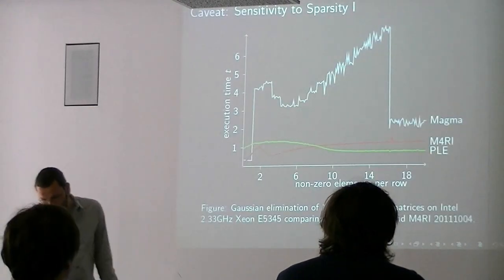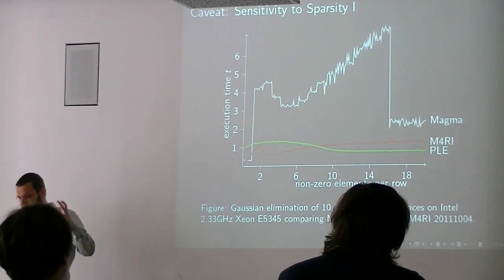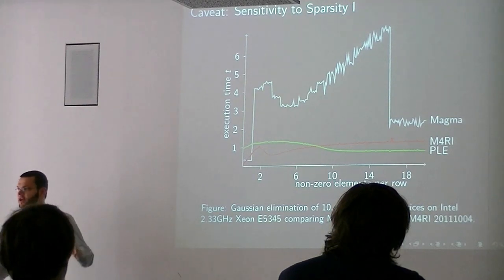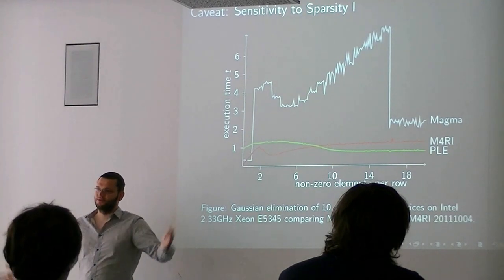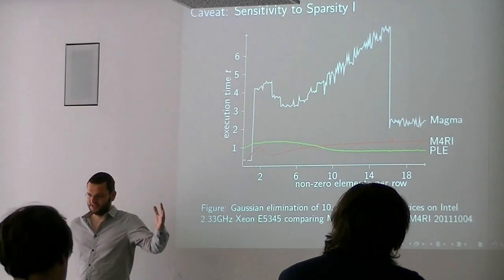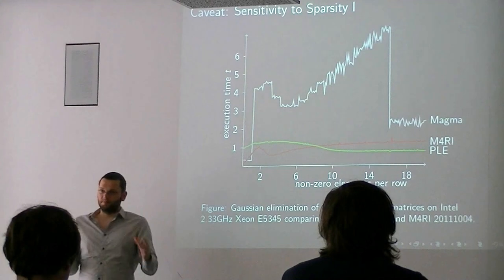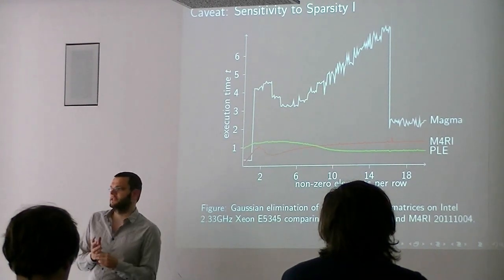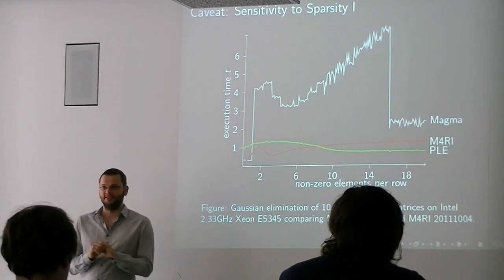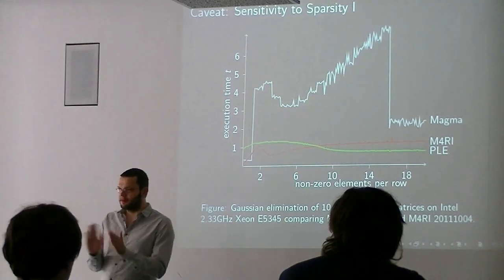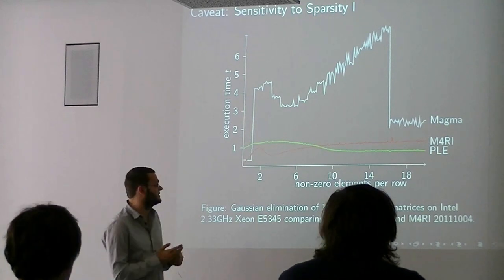Right, so Gröbner basis computations a little bit. The first caveat is these algorithms are designed to be rank sensitive. So if you have a lower rank, you do less operations. The way this is achieved is if you find columns where you couldn't find the pivot, you compress them. So you do less operations. Well, compressing - swapping columns in matrices over GF2 that you store bit-packed is not that efficient. So you actually, these column swaps, they can kill you. And as you can see, they do kill us.